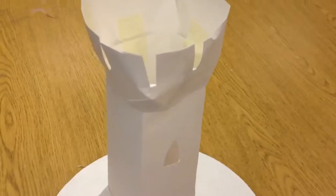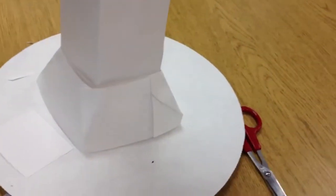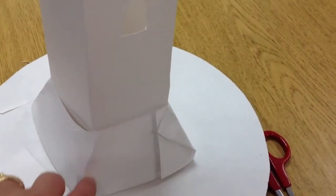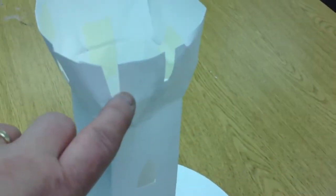Now let's review. We have the crenellations. We have the very high up small windows. We have an angle to our tower so that it's hard for invaders to get in.